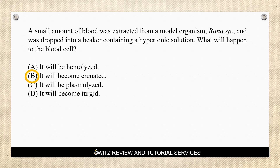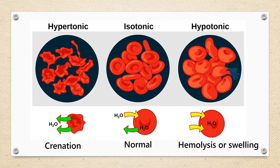A blood cell or plant cell placed in a beaker with hypertonic solution: water leaves the cell from high concentration to low concentration of water, and the cell will be crenated. In a hypotonic solution, water moves towards the cell, causing it to swell and eventually burst.